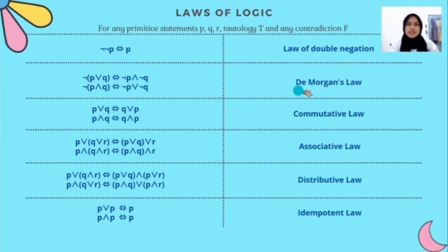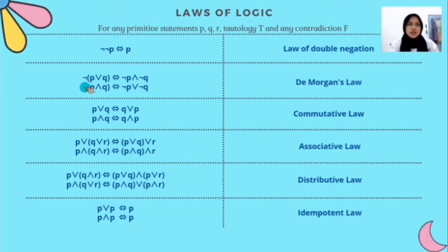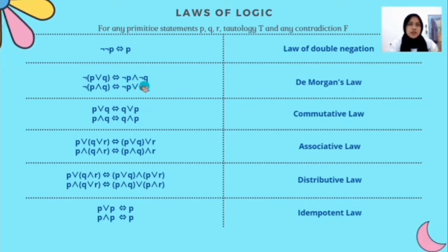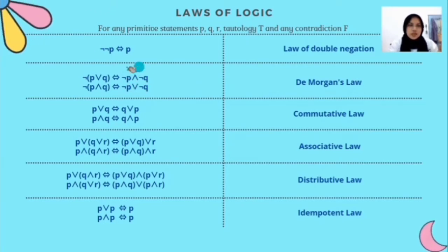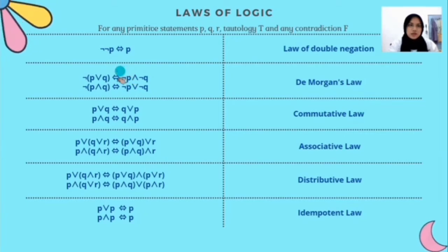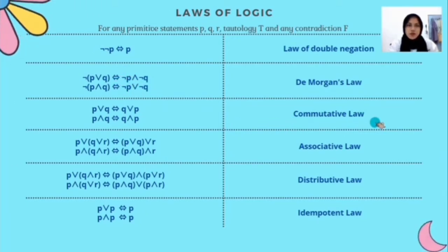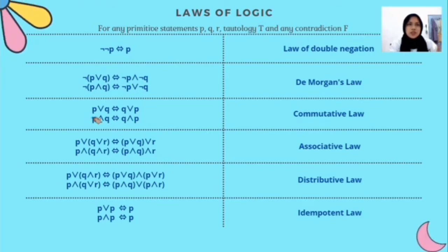This is De Morgan's law. For example, ¬(P ∨ Q) is equivalent to ¬P ∧ ¬Q. The symbols here will change, and the statement will have the 'not' symbol in front of it. Next is commutative law. For example, P ∨ Q is equivalent to Q ∨ P.